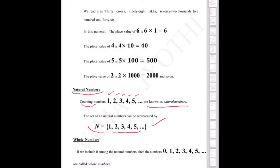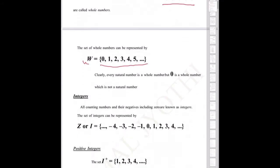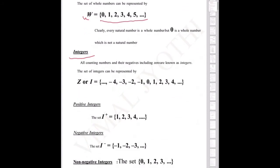Then, whole numbers. Whole numbers are denoted by the letter W. W equals 0, 1, 2, 3, and so on. Then, integers. Integers include both whole numbers and negative numbers. Integers are denoted by Z or I — that is: minus 4, minus 3, minus 2, minus 1, 0, 1, 2, 3, and so on.